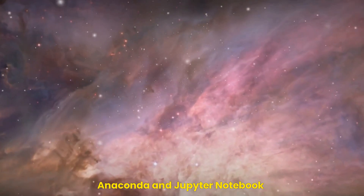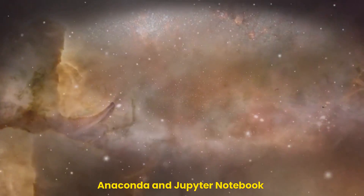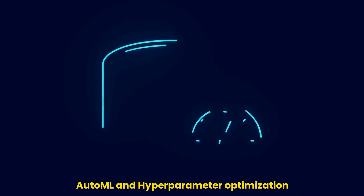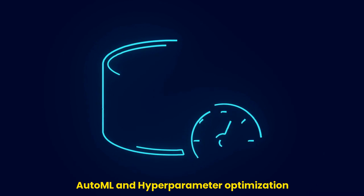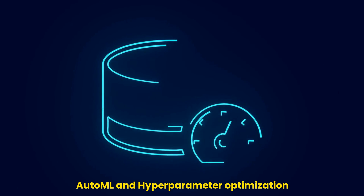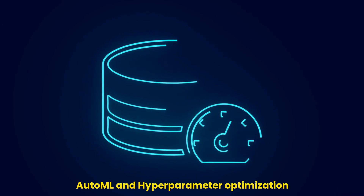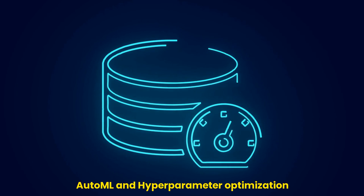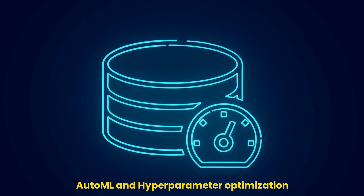Anaconda and Jupyter Notebook are used for data science projects. AutoML and hyperparameter optimization are used for automating the process of machine learning.